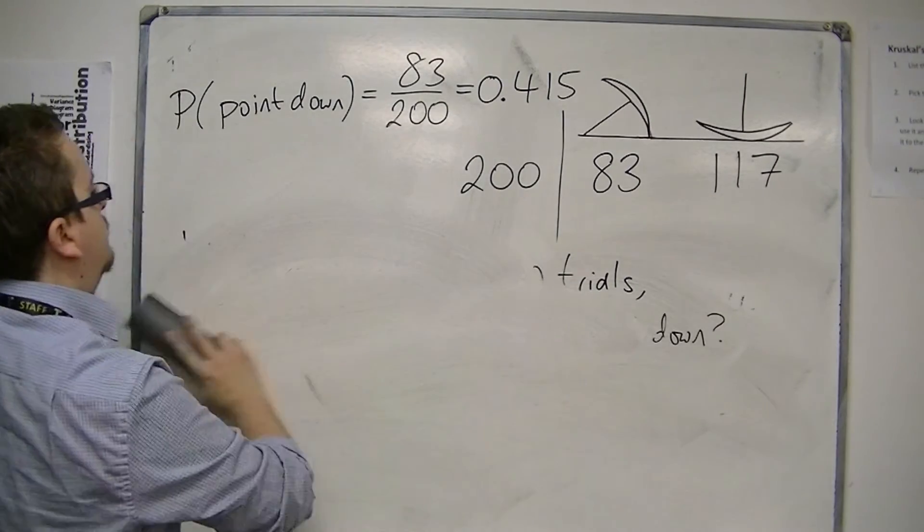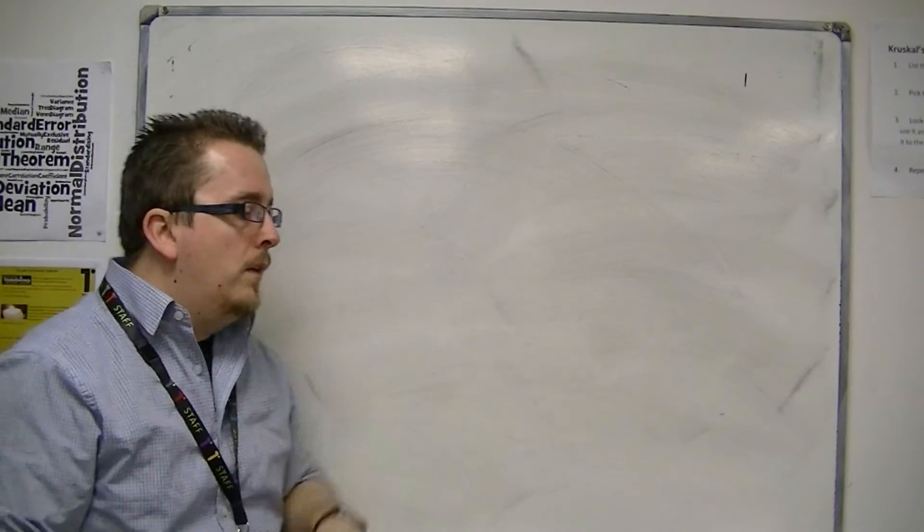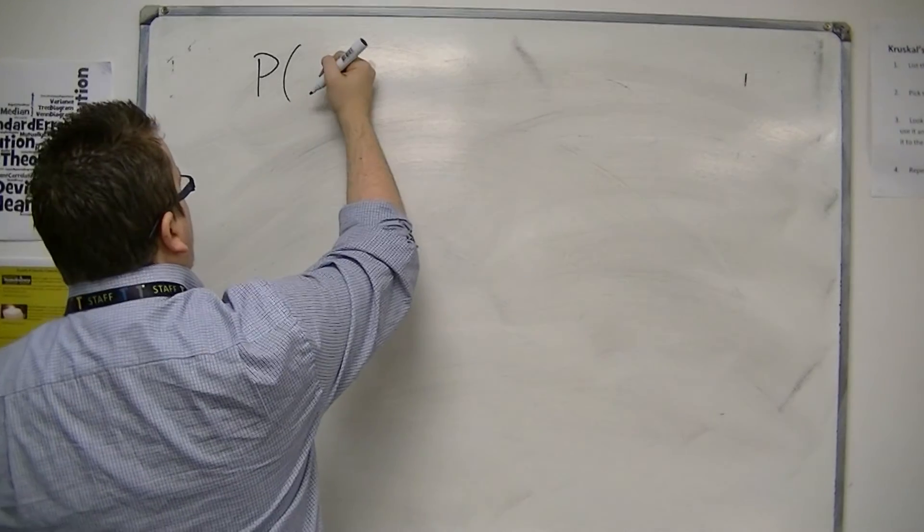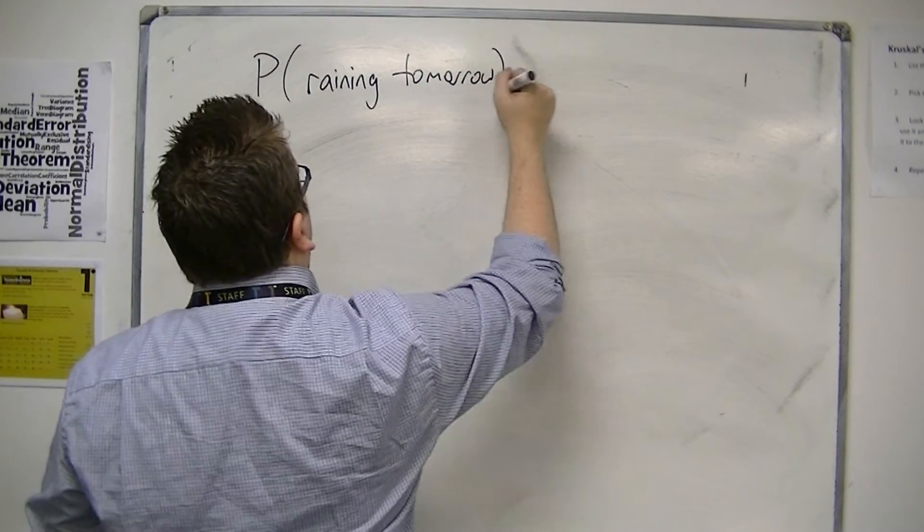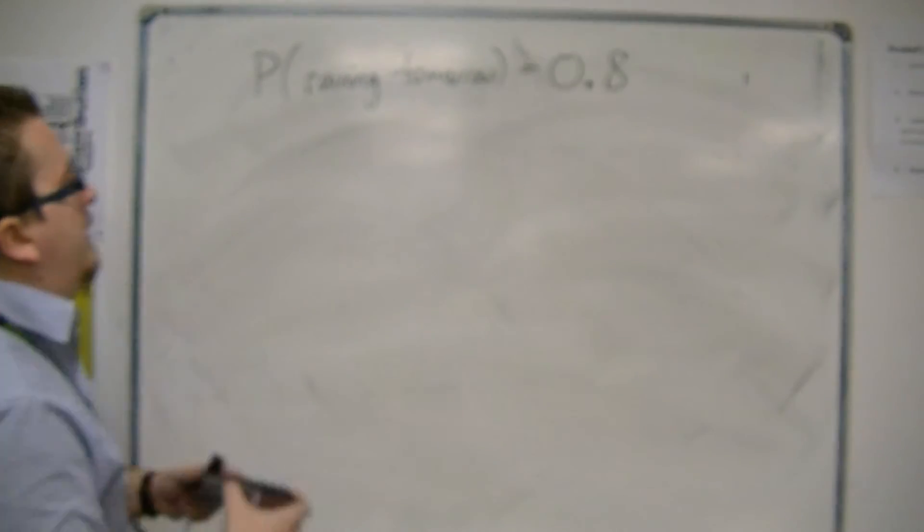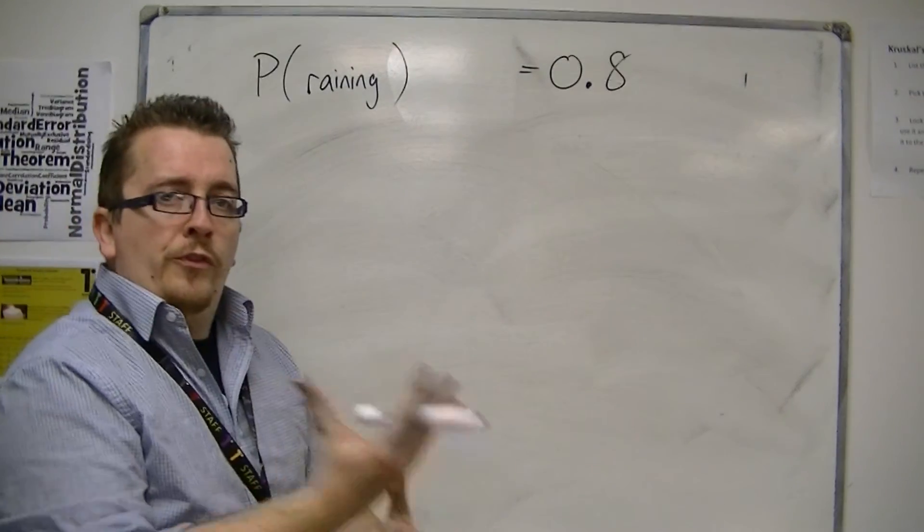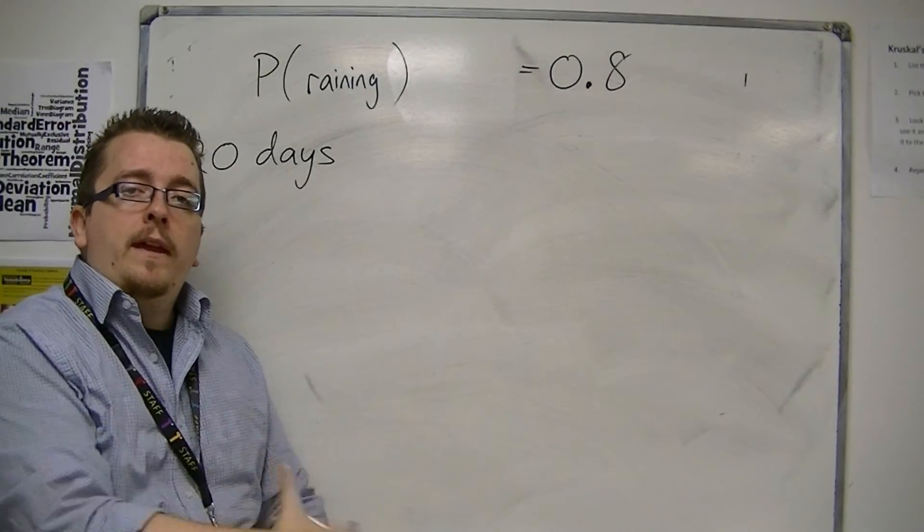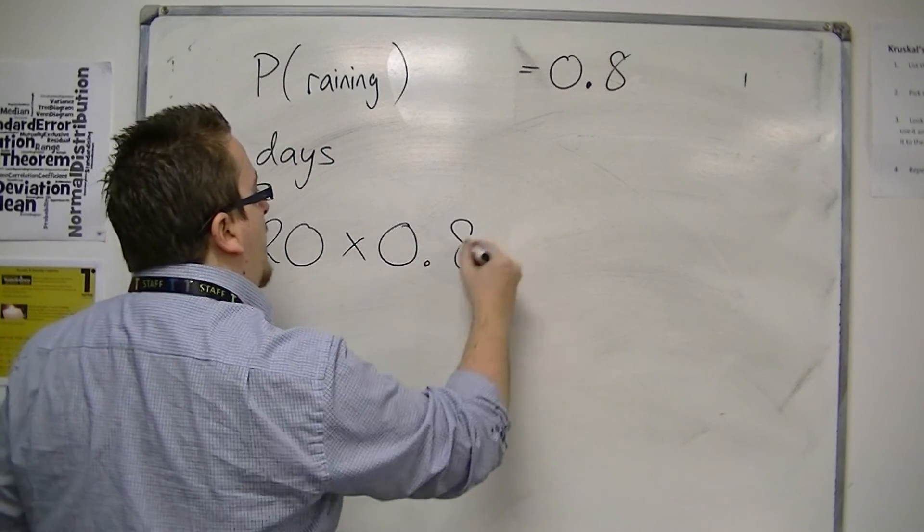Let's look at another example just to make sure that this is clear. Let's say the probability of it raining tomorrow, let's just say the probability of rain is 0.8. Then out of twenty days, how many would I expect it to rain on?